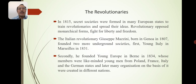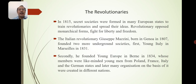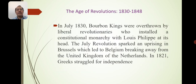In 1815, secret societies were formed in many European states to train revolutionaries and spread their ideas. Revolutionaries opposed monarchical forms of government and fought for liberty and freedom. The Italian revolutionary Giuseppe Mazzini, born in Genoa in 1807, founded two underground societies: first, Young Italy in Marseilles in 1831; and secondly, Young Europe in Berne in 1834, whose members were like-minded young men from Poland, France, Italy, and the German states. Later, many organizations on the basis of these were created in different nations.